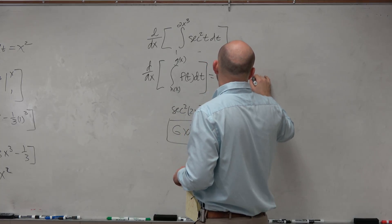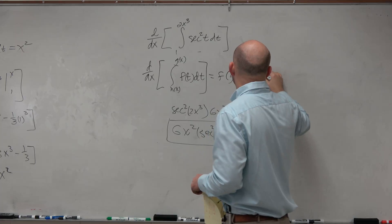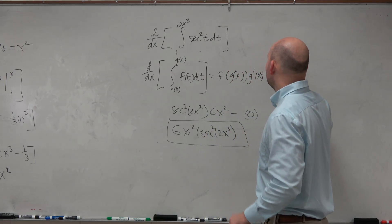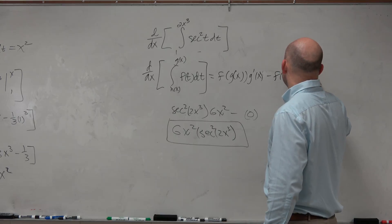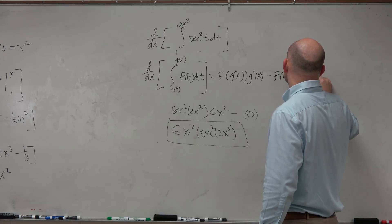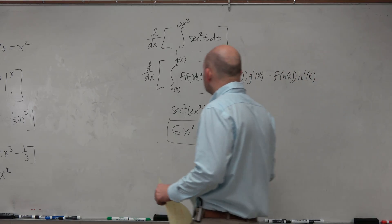And then times g prime of x, then minus f of h of x, times h prime of x. OK?